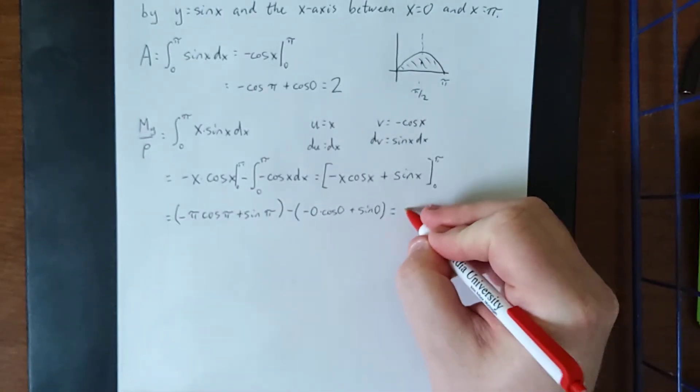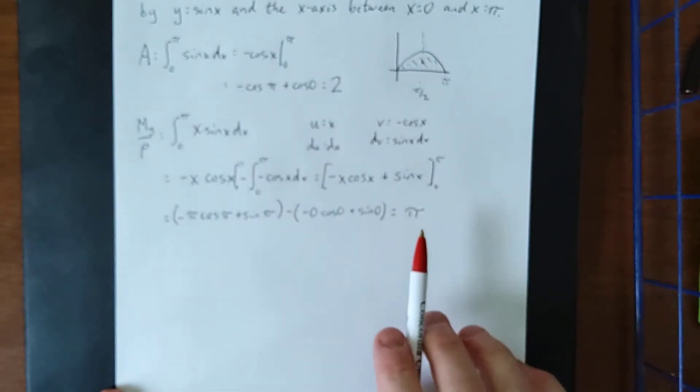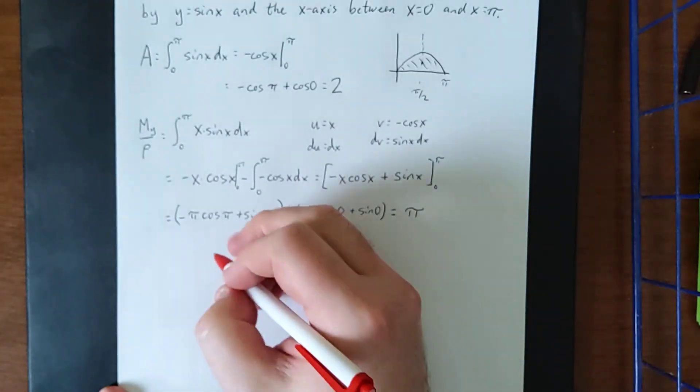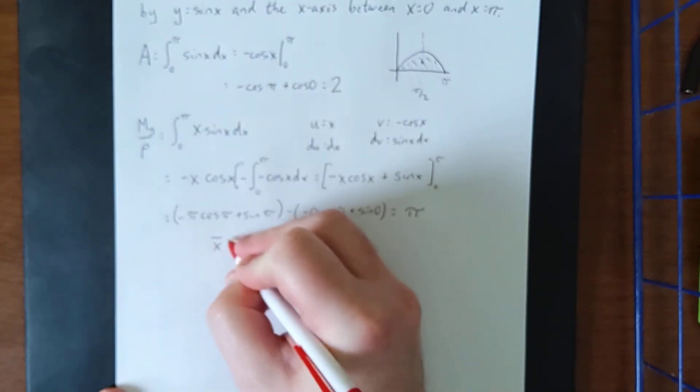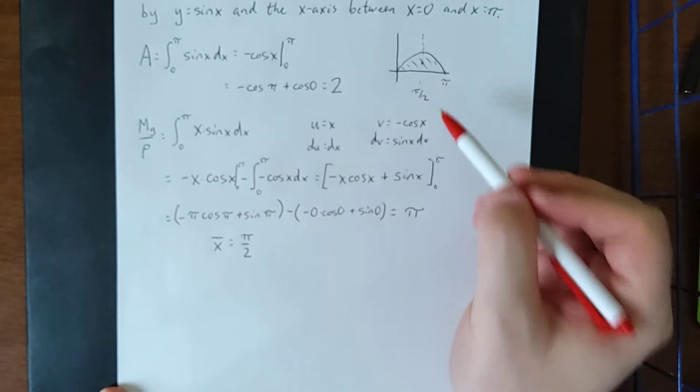Cosine of pi is negative one, so negative pi times negative one will give us pi. And indeed, if we were to divide this moment by this area, we would get our x coordinate for the center of mass. That is going to be pi over two, as we had previously predicted from the symmetry.